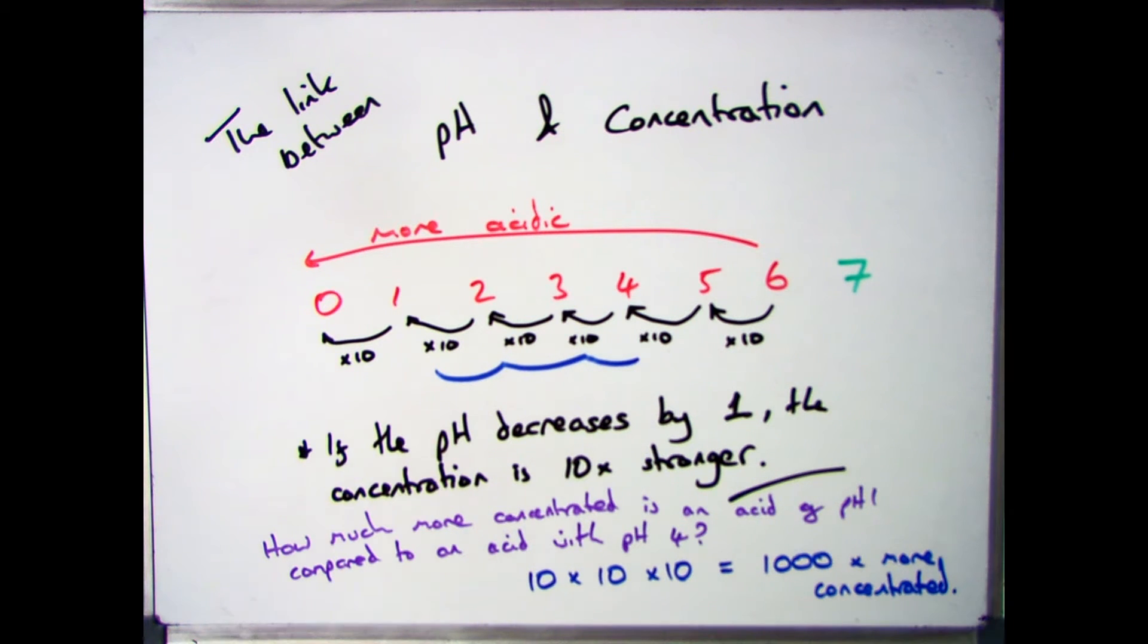The same can be said for pH. So if they turn around and say something is 10 times more concentrated, the pH will go down by 1. So for example, if it started off at pH 4 and became 10 times more concentrated, it would be pH 3.